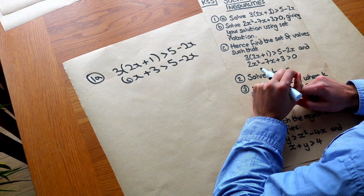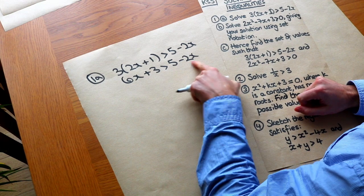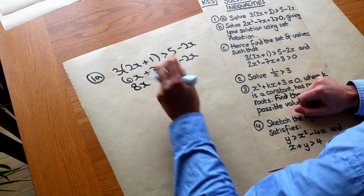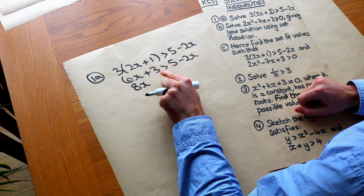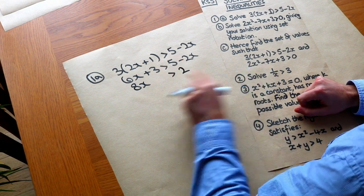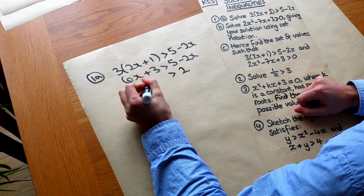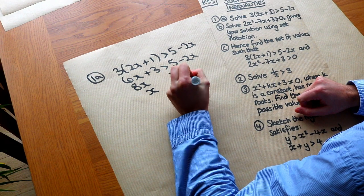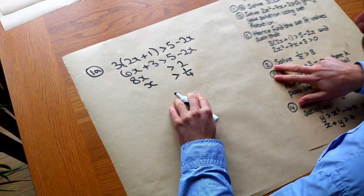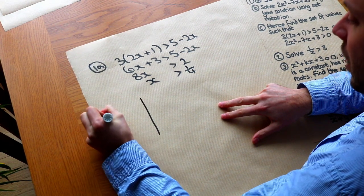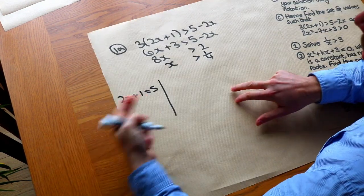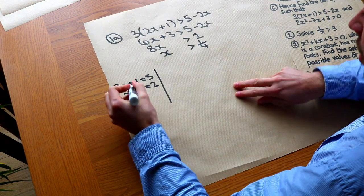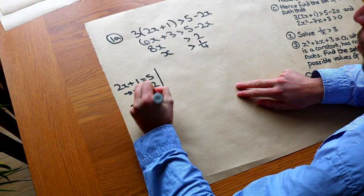Now let's get all the x's on the side with more x's. There are more x's on the left, so we add 2x to each side - that becomes 8x. At the same time, we minus 3 from both sides to get rid of the plus 3, giving 2. Now we have all x's on one side. Dividing by 8 gives x is greater than 2/8, or a quarter.